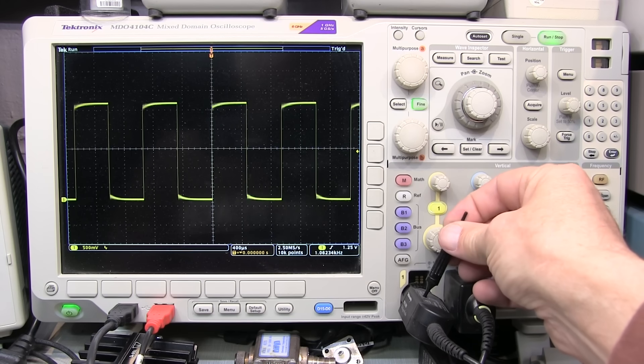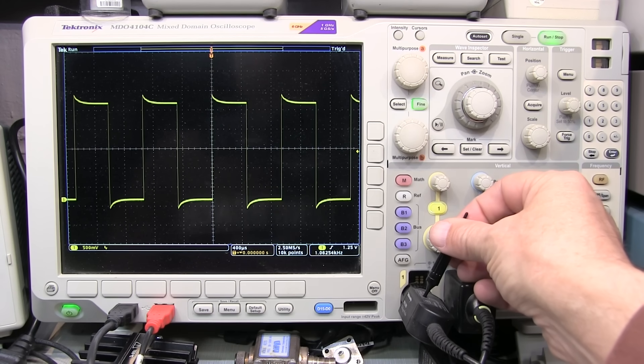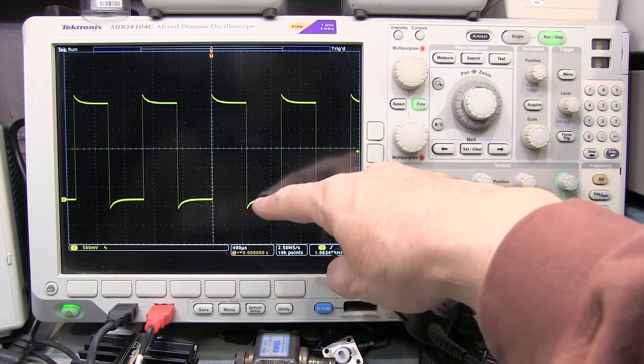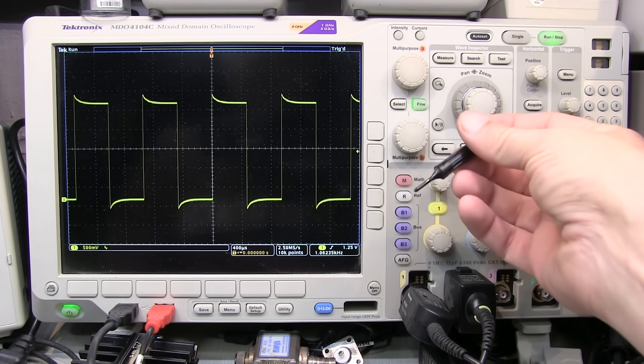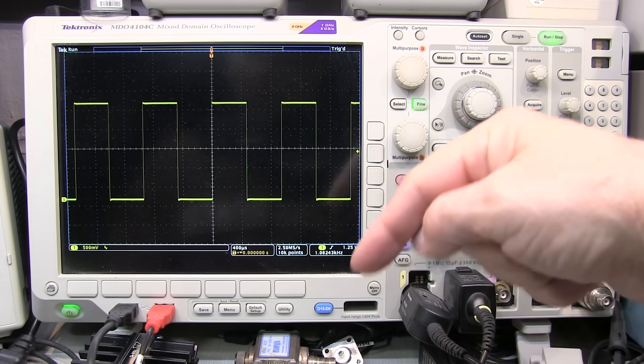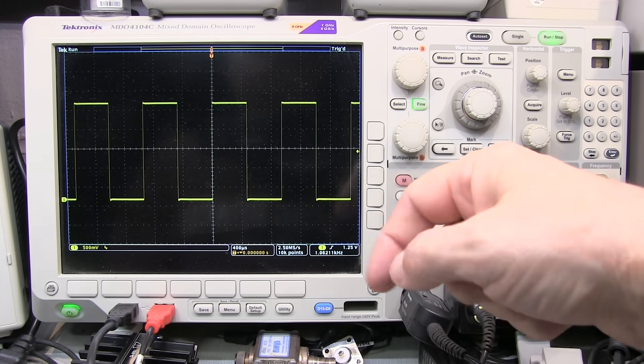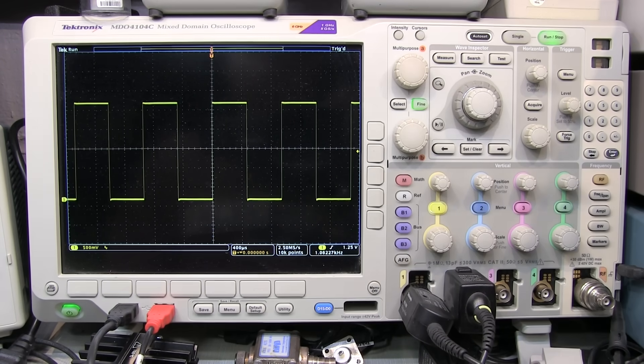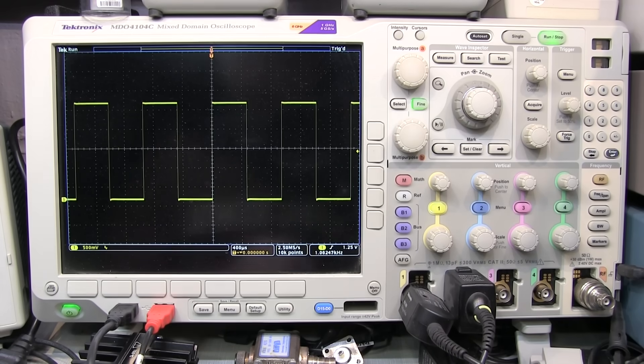Because if you don't, you can have some pretty significant errors in amplitude of signals above 10 to 20 kilohertz. So properly compensating your probe is important to get a good flat frequency response. I have another video linked down below that really illustrates the importance of proper compensation of your 10x probes.